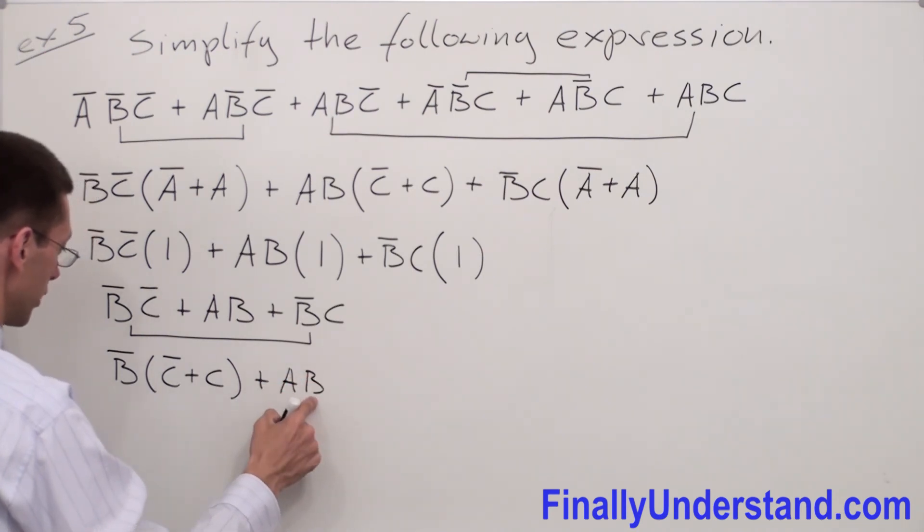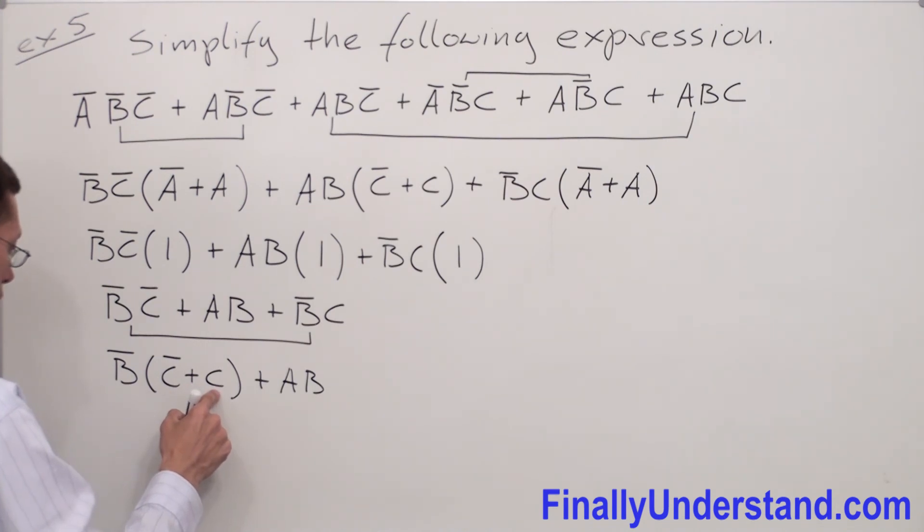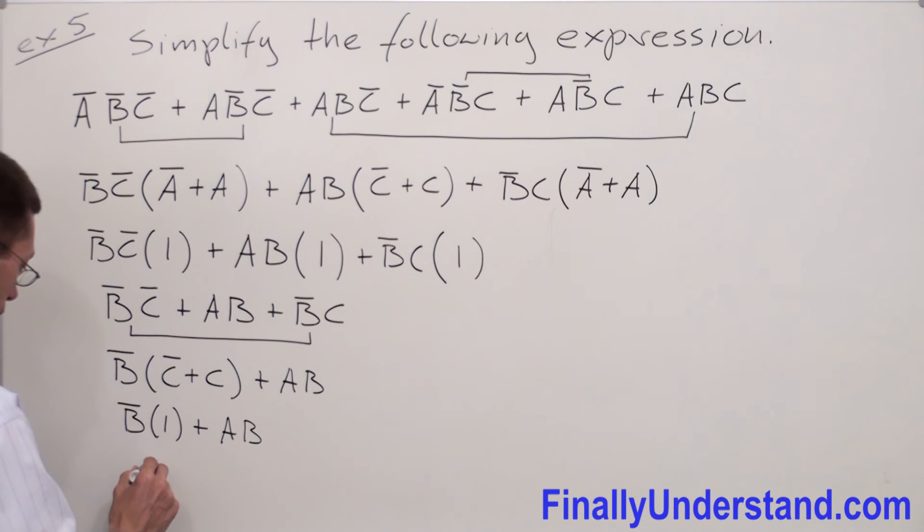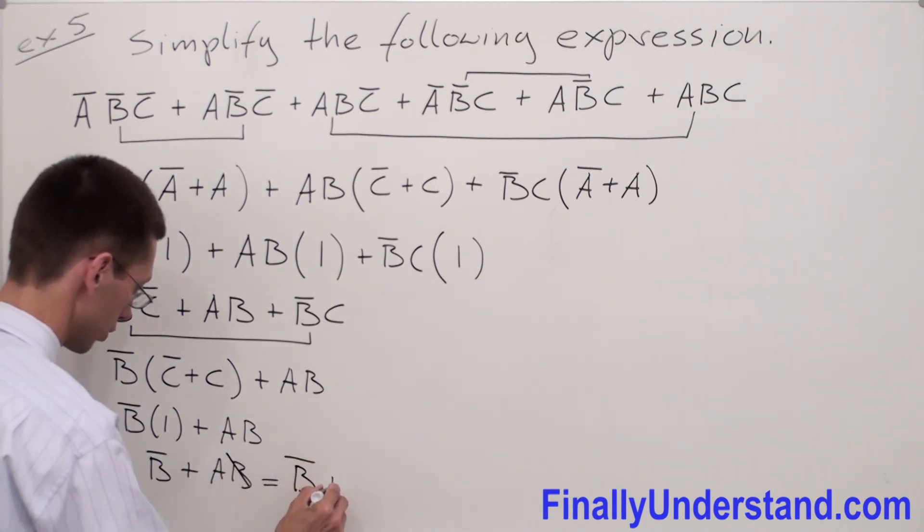C̄ or C will always give me 1. I'm going to have B̄ times 1 or AB. B̄ times 1 will give me always B̄ plus AB, or B̄ or AB. Remember, we have to use complement absorption theorem. So anytime we have complements and one of them is ANDed with something else, the one which is ANDed with something else has to be cancelled out. So my answer is B̄ or A.